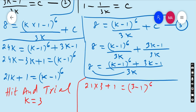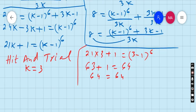If I put 3, so 21×3 plus 1 equals (3 - 1) to the power 6. 21×3 is 63 plus 1. 3 minus 1 is 2 to power 6 which is 64. So 64 equals 64, hence the value of k is satisfied.